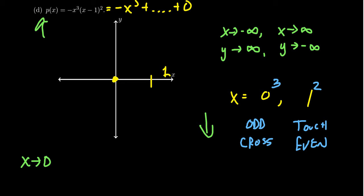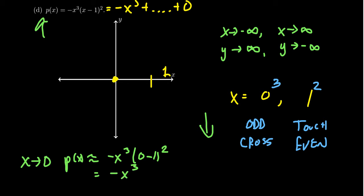So I'm going to take p of x and approximate it as negative x cubed times 0 minus 1 squared. This simplifies to: 0 minus 1 is negative 1, squared is positive 1, so you get negative x cubed. That's what it's going to look like near the origin — so as we're near the origin, you're going to get something like negative x cubed.